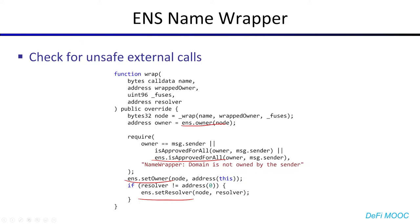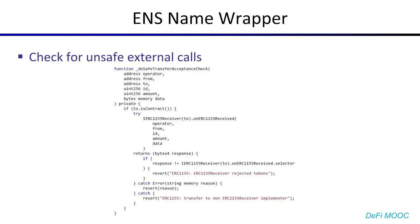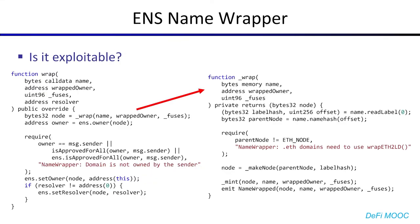On the other hand, if we look inside the ERC1155Fuse file, we can see that, as expected, this file implements the ERC1155 standard and explicitly makes an unsafe external call to the recipient of the token when it is minted. So now that we have an unsafe external call, the question is: is this call exploitable? If we look at the wrap function, we can see that when we first enter a wrap, we will immediately call _wrap, which will call _mint, and then once we've minted the token, we will receive the callback.